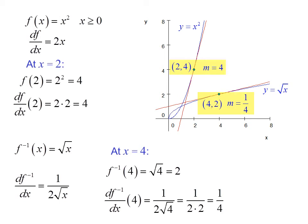Now we notice something interesting here. At point (2, 4) in the original function, the slope is 4. If we switch x and y, at point (4, 2) on the inverse function, the slope is 1/4, which is the reciprocal.